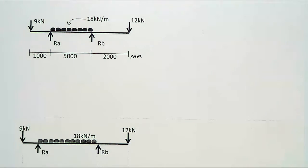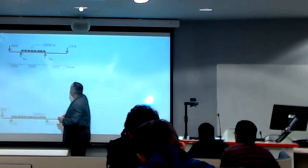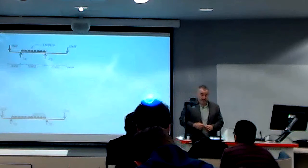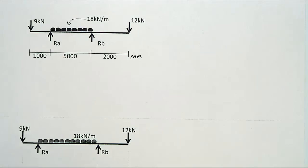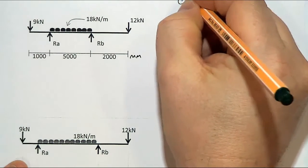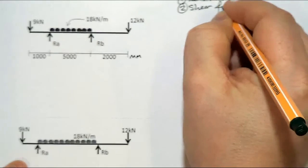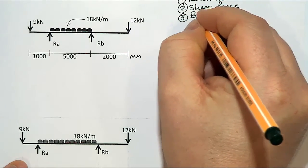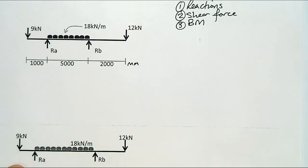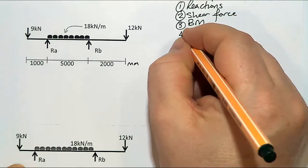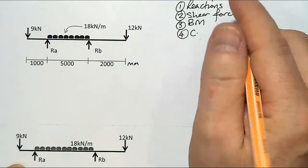Our distances are 1 metre, 5 metres, and 2 metres, but those values are given in millimetres. Just take care where you've got things in millimetres — our UDL is in metres, kilonewtons per metre. So the steps are: 1 — reactions, 2 — shear force, 3 — bending moment, and 4 — we'll look at the point of contraflexure.